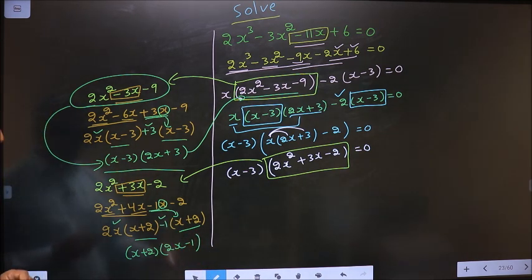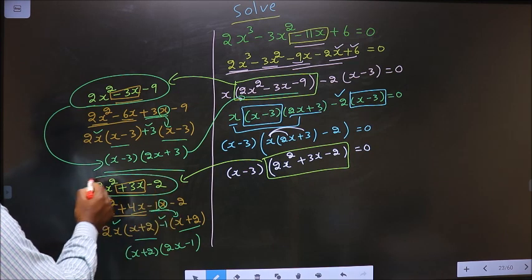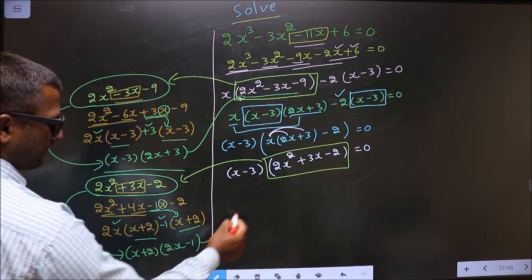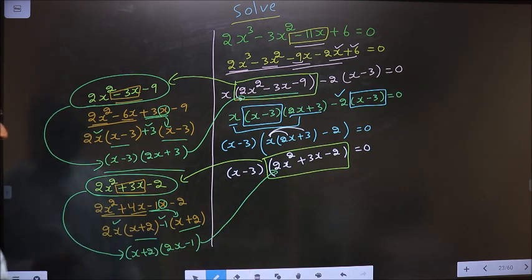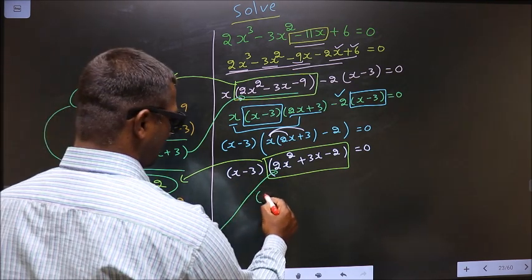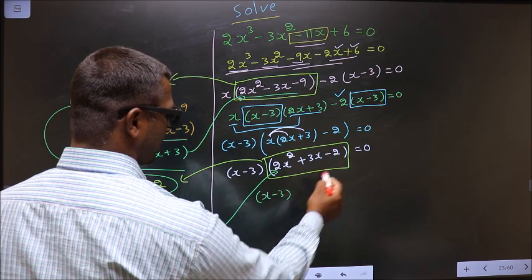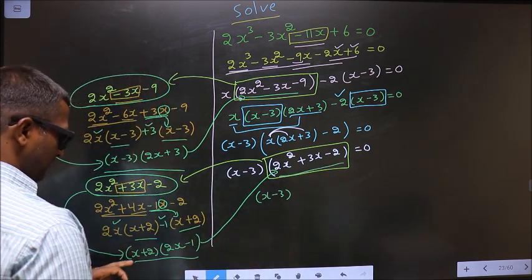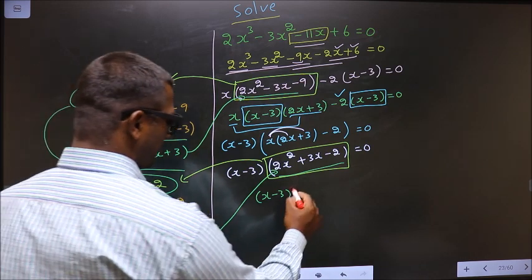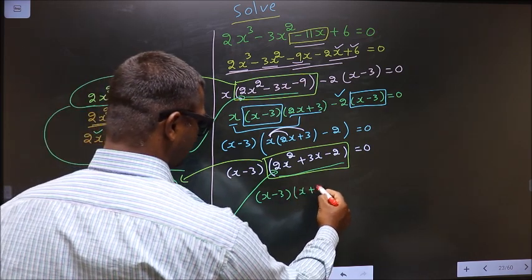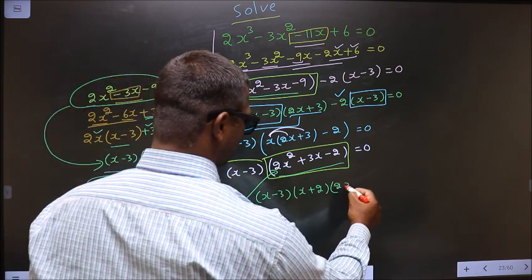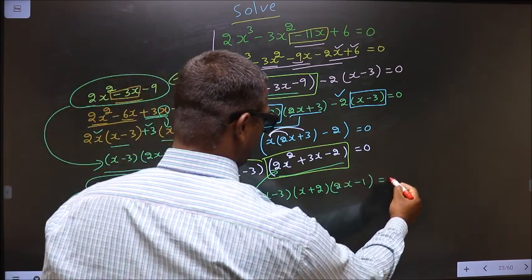Now in place of this quadratic I will replace it back. So it is x minus 3 times, in place of this quadratic you write: x plus 2 times 2x minus 1, equal to 0.